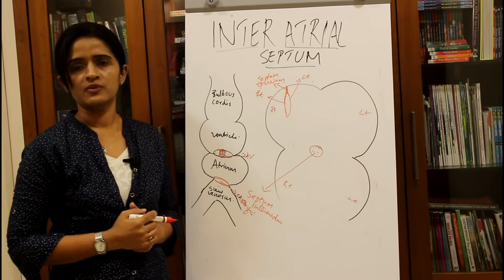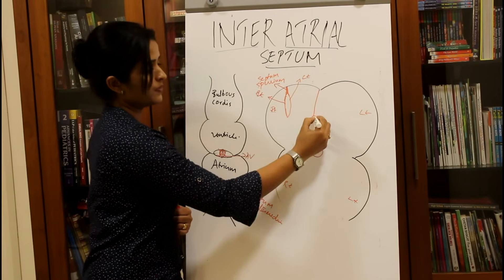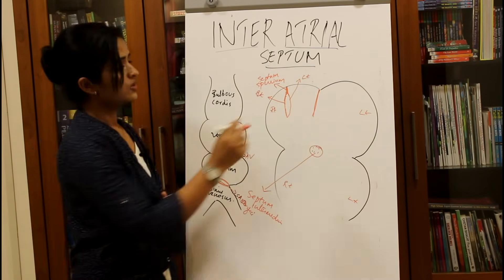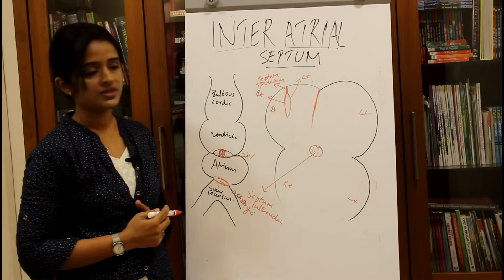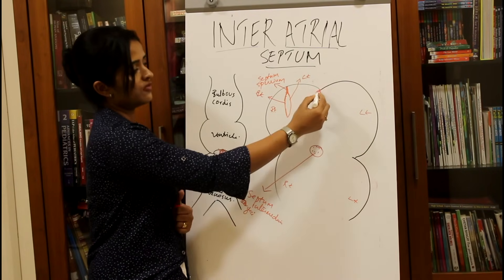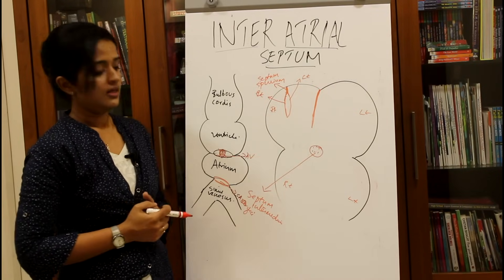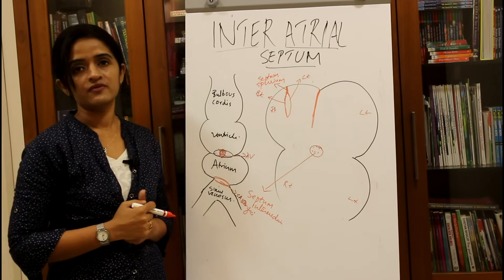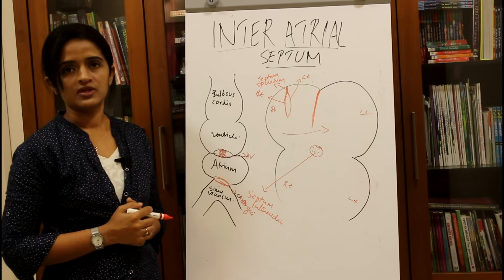Now we move on to the formation of the inter-atrial septum. The first formed septum is called the septum primum — the word 'primum' meaning first. The septum primum forms from the roof of the atrium and gradually moves downwards, aiming to meet the septum intermedium. Even though it is trying to meet the septum intermedium, blood must still flow from the right atrium to the left atrium, as we have seen in fetal circulation.